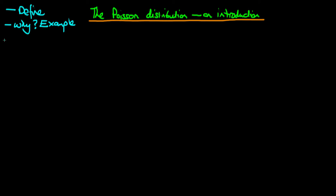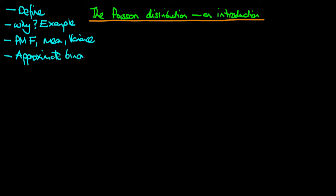We're then going to talk about the probability mass function of a Poisson distribution. In particular we're going to derive its mean and just state its variance, although it can be obtained in a very similar way to the mean. We're also going to talk about when the Poisson distribution can be used to approximate a binomial distribution, and finish by stating the conjugate prior distribution of a Poisson distribution.